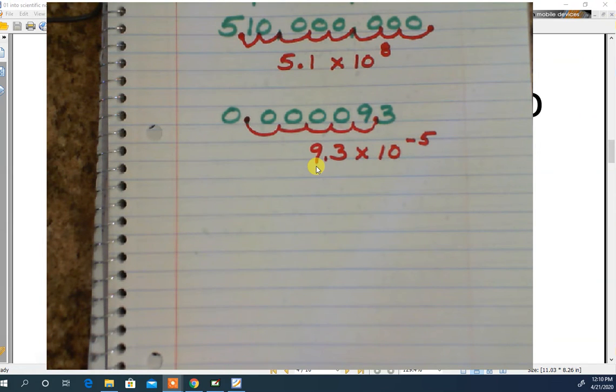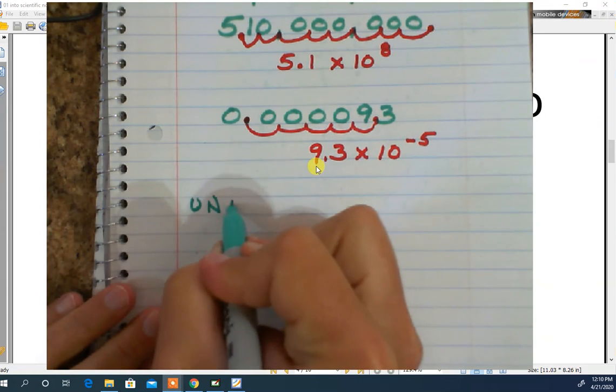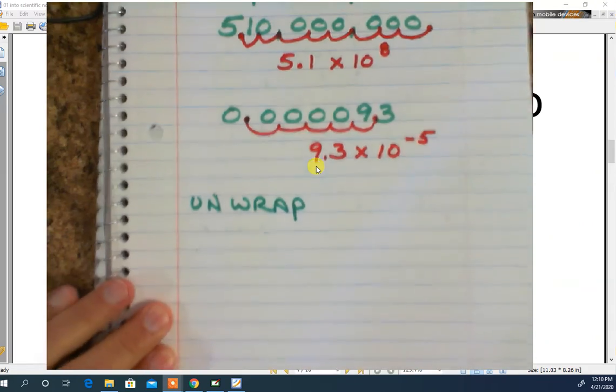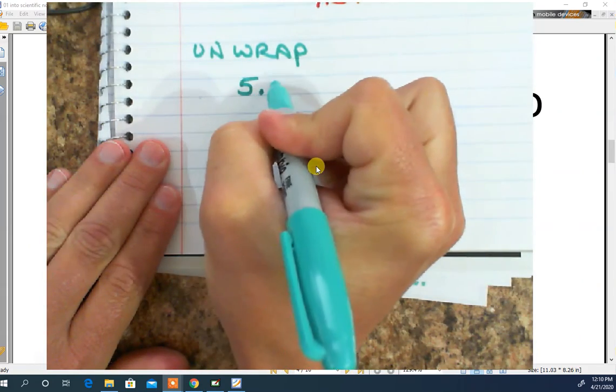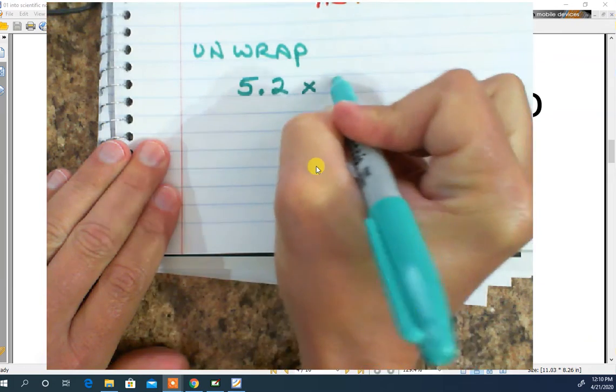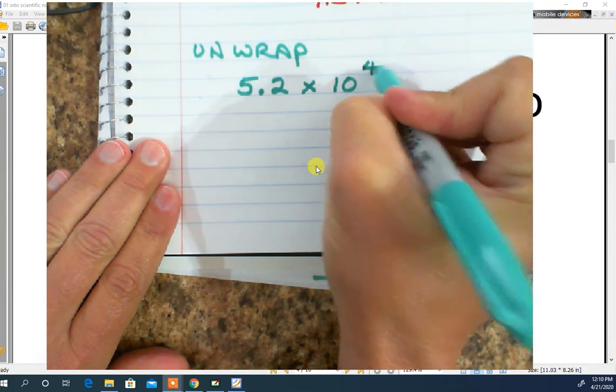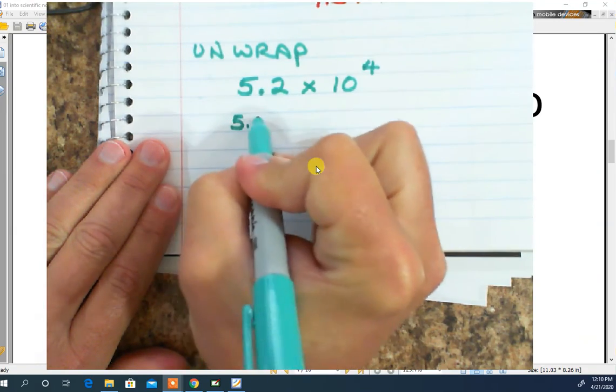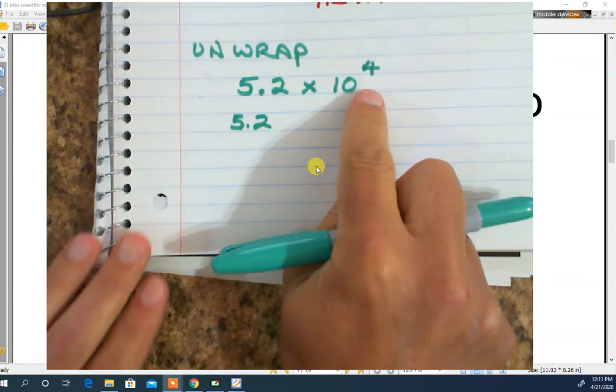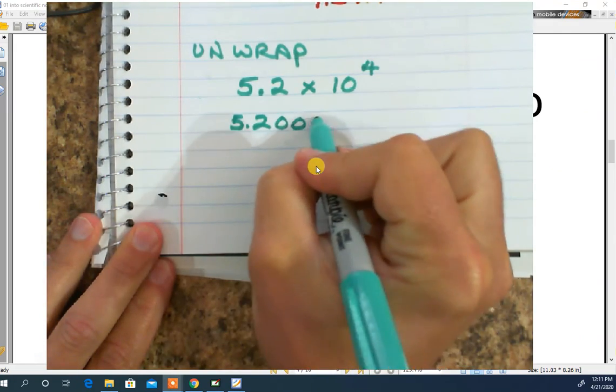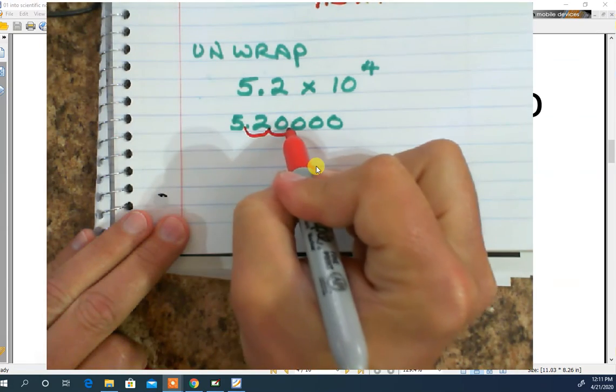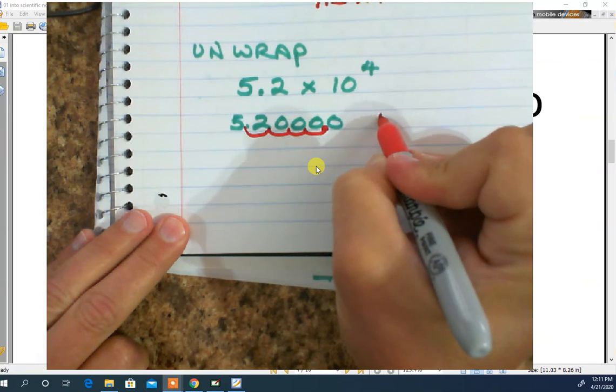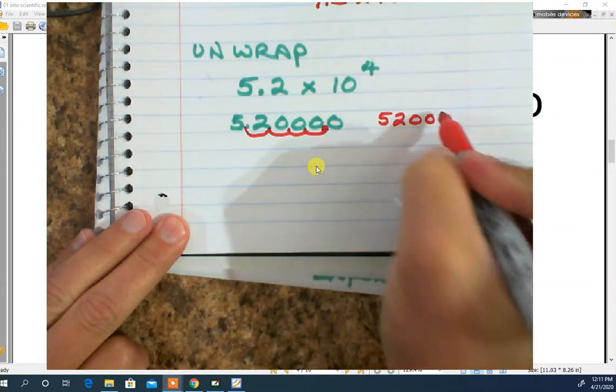Let's do a couple unwraps. Let's go with 5.2 times 10 to the 4th. So I go with 5.2, and I have to add four zeros to it. 1, 2, 3, 4. Then I have to make how many jumps? I have to make four jumps. 1, 2, 3, 4. So now the decimal is right there, which is 52,000.